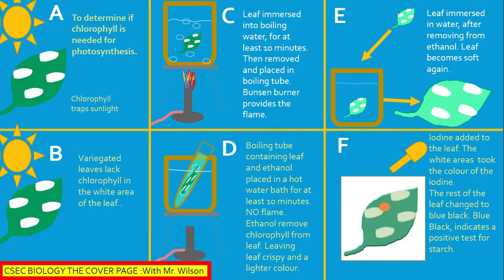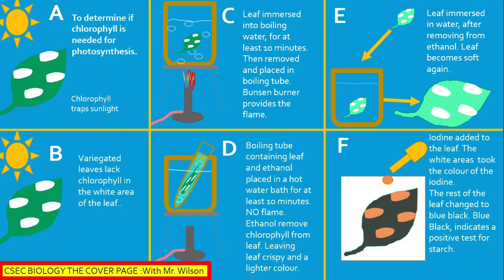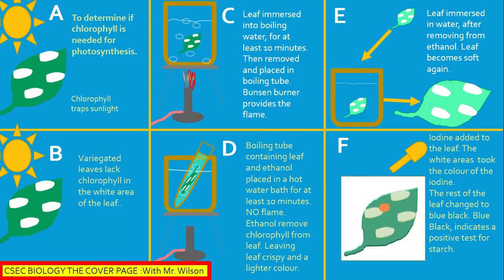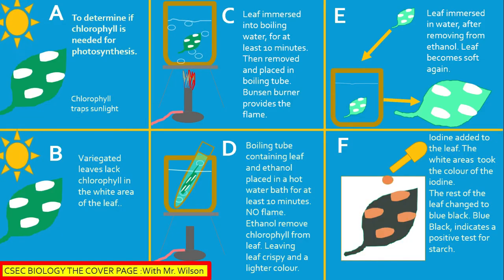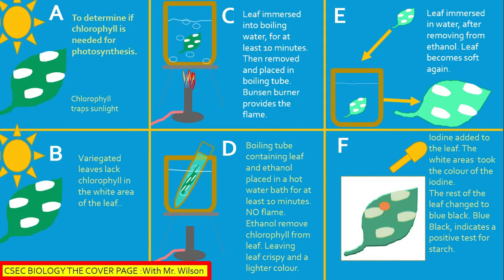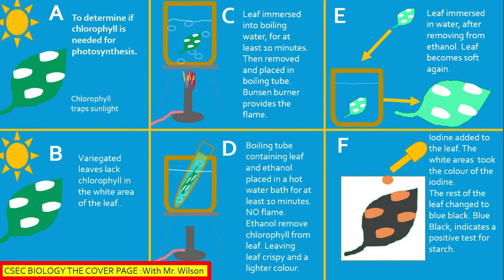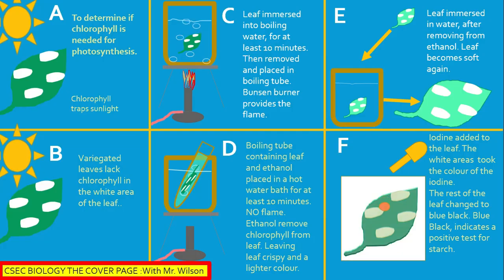This is an experiment: we are going to test the leaf to find out if it stores starch. The leaf used is a variegated leaf — meaning some parts have chlorophyll and some parts do not. First, place the leaf in boiling water to stop the reaction. Then immerse the leaf in alcohol to remove the chlorophyll. After removal from the ethanol, the leaf will feel a little crispy. Then place it back in water so it becomes moist and soft again.